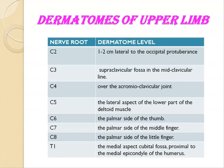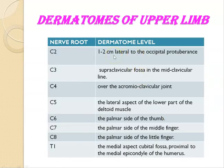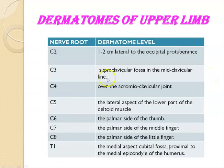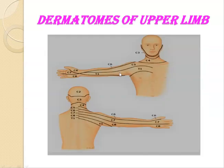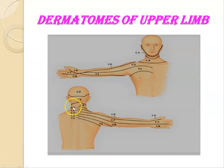Let us see the dermatomal levels. C2 supplies approximately 1 to 2 centimeters lateral to the occipital protuberance, as shown in the diagram. C3 is at the supraclavicular fossa in the midclavicular line. C4 is over the acromioclavicular joint.